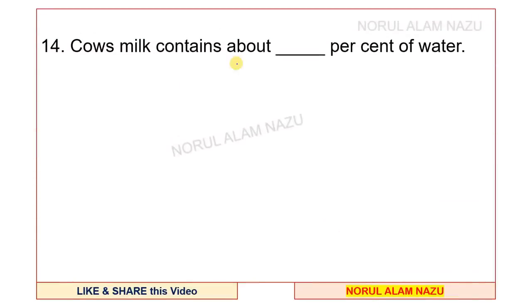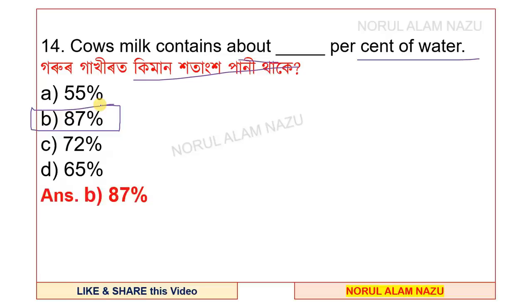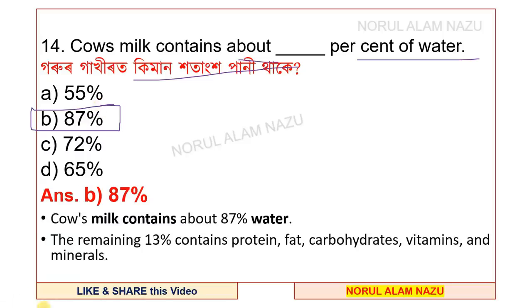Cow's milk contains about 87% water. The remaining 13% contains protein, fat, carbohydrates, vitamins and minerals.